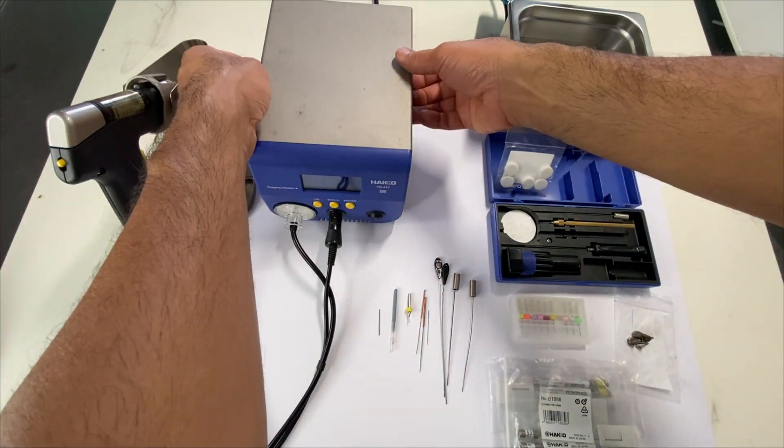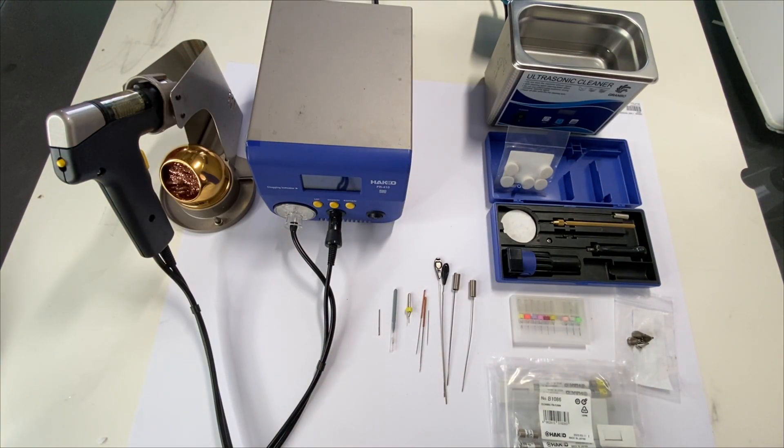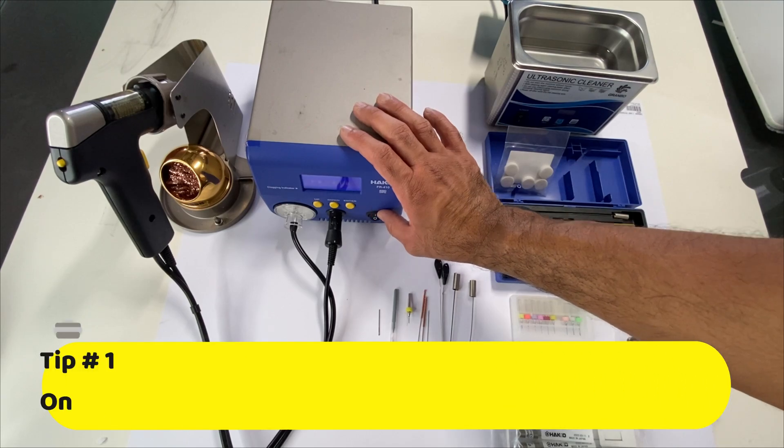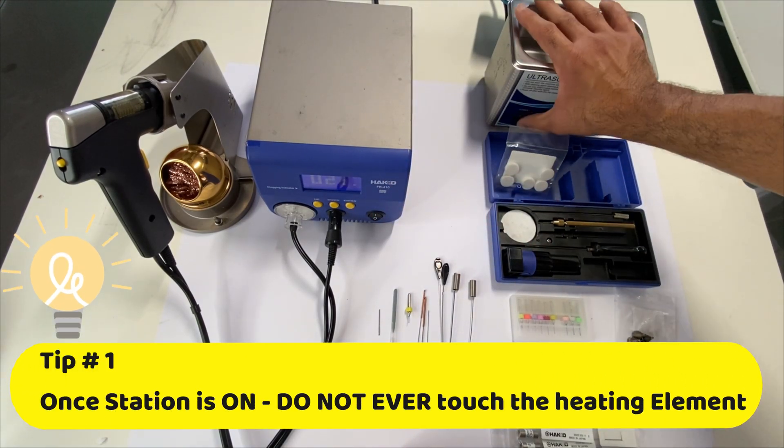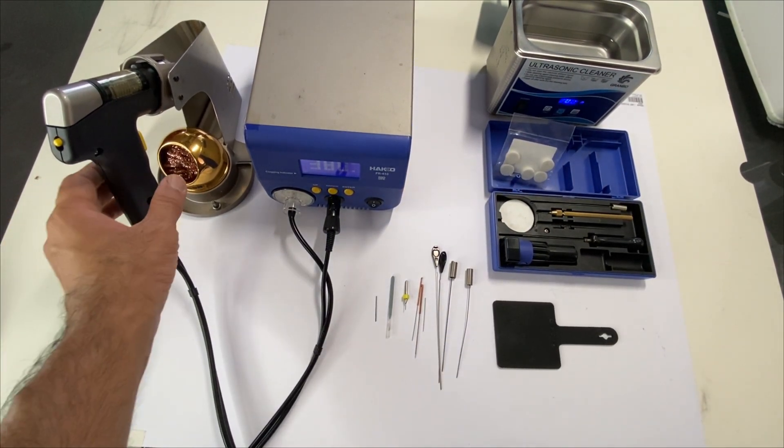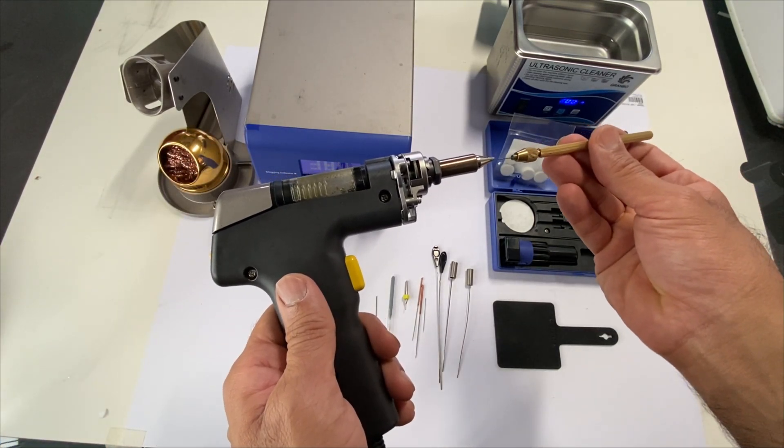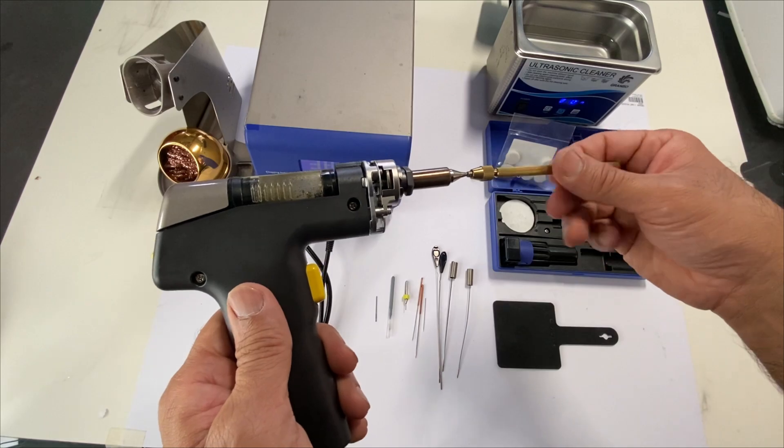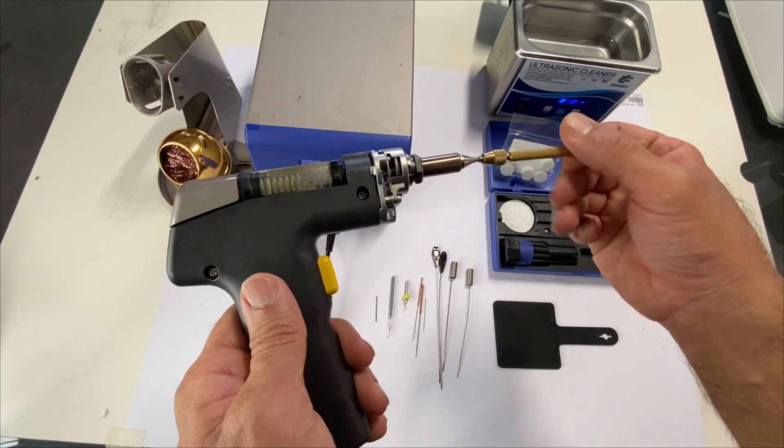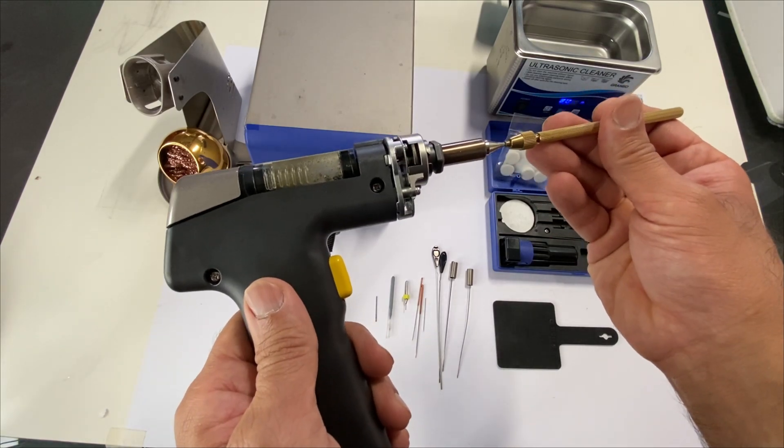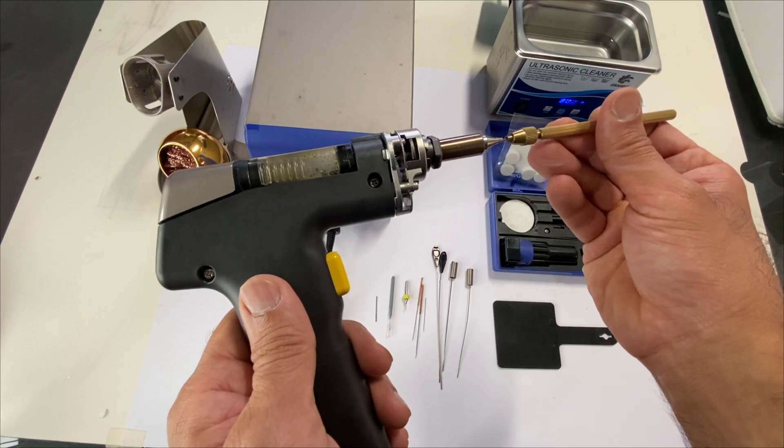Alright, let's get going. Step one, I'm just going to turn on our station here. Once it's all ready, grab your tip cleaning, insert this, clean it up. I'm just going to insert it a few times.